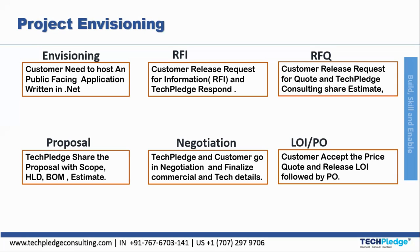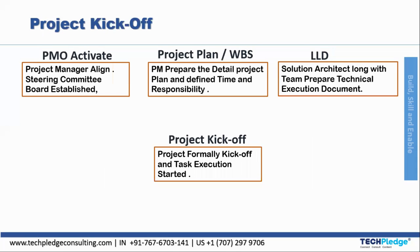After the proposal is validated and successful, TechPlace moves to the negotiation table. After that comes the Letter of Intent or Purchase Order. The Letter of Intent is where the buyer expresses interest in hiring the seller — it is not a contract but only an indication so the seller can start preparatory work. A Purchase Order is where the buyer awards the contract to the seller. In the Azure project, the customer accepts the quoted price and releases the LOI followed by the PO.